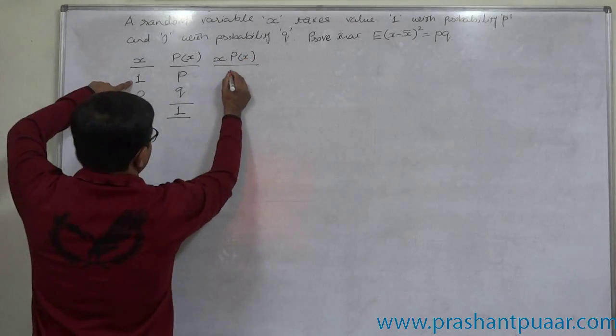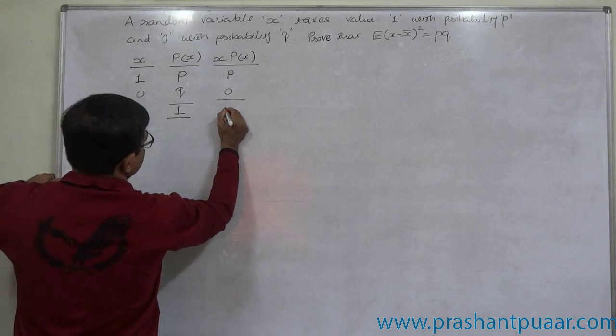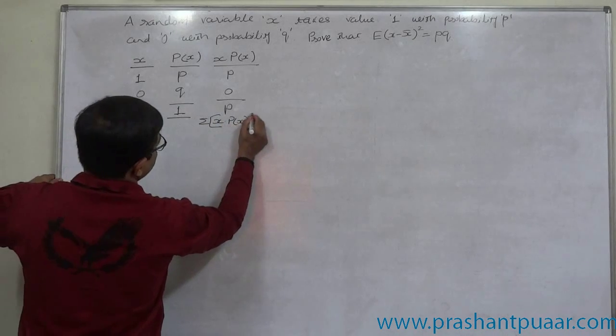One into P is P and 0 into Q is 0. So summation is P. Sigma X into P of X is P.